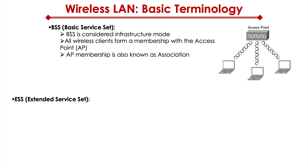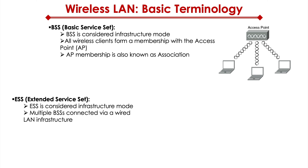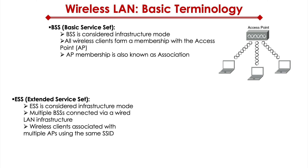Finally, there is ESS, or Extended Service Set. It's also considered Infrastructure Mode, similar to BSS. The difference is when you combine multiple basic service sets together via a wired LAN infrastructure, that's what makes up an ESS. Wireless clients associate with multiple APs using the same SSID, and ESS facilitates transparent roaming.